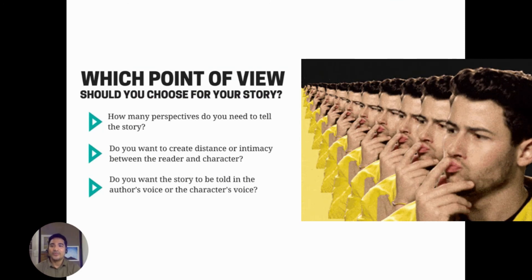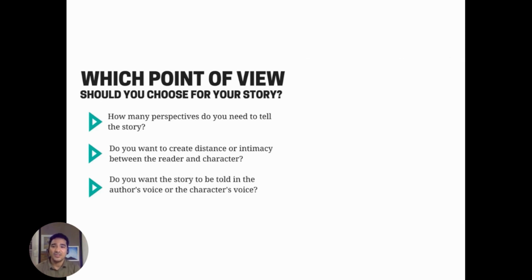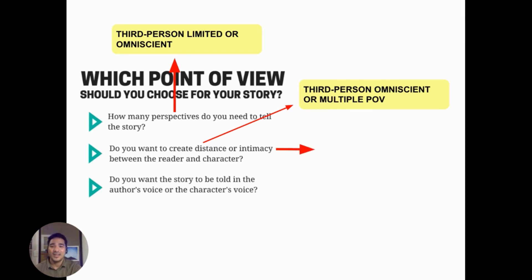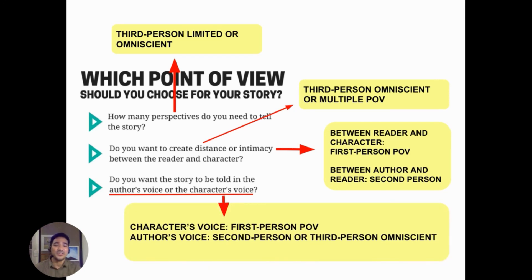Which point of view should you choose for your story? You may ask yourself the following questions. How many perspectives do you need to tell the story? Use third person limited or omniscient if you are planning to tell your story in multiple perspectives. Do you want to create distance or intimacy between the reader and the character? If you want to create distance, then third person omniscient or multiple point of view would be fine. For intimacy between reader and character, use first person point of view; between author and reader, use second person. Do you want the story told in the author's voice or the character's voice? For the character's voice, use first person; for the author's voice, use second person or third person omniscient.